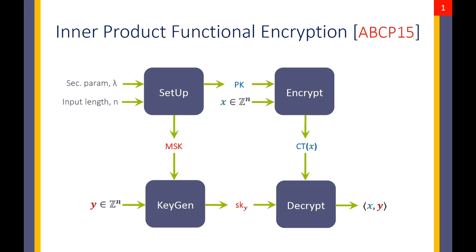An inner product functional encryption scheme is a public key encryption scheme that encrypts n-dimensional integer vectors. We can associate functional decryption keys to key vectors y. The decryptor using such a key can decrypt the initial message, but can only recover partial information about the message — namely the inner product of x and y. Such functionality is useful for computing weighted sums of encrypted data without revealing each individual component.